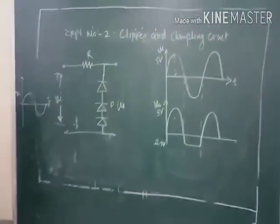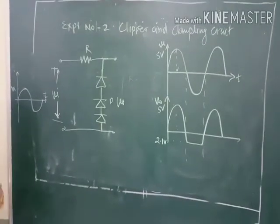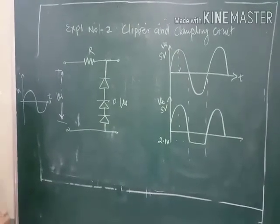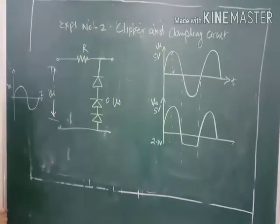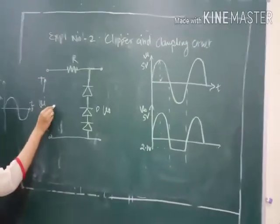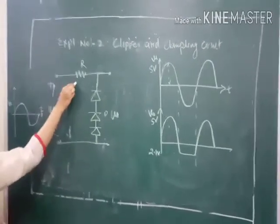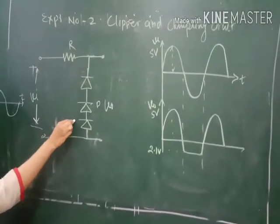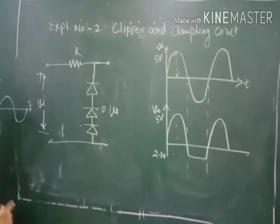The clipper, as the name suggests, will clip some part of the input waveform. If it is clipping the positive part, it is called a positive clipper; if it is clipping the negative part, it is called a negative clipper. The clipper circuit consists of a diode and a resistance. We may connect one, two, or three diodes depending upon how much of the waveform we want to be clipped.